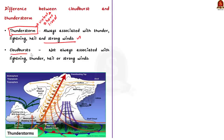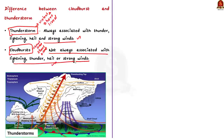This is similar to cloudburst — both involve extreme precipitation over a short period. However, the major difference is that unlike thunderstorms, cloudburst is not always associated with lightning, thunder, hail, or strong winds. Thunderstorms are always associated with these elements, but cloudbursts are not. This is the key difference between cloudburst and thunderstorm.